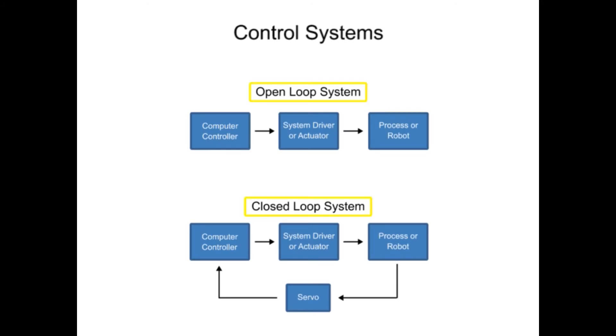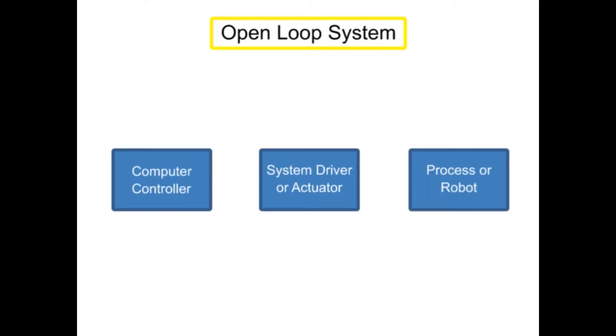There are different types of control systems used in robotics. In open-loop control, the computer sends signals based on the current state without taking into account feedback from the system. This type of system is also called non-servo, or pick and place, and is used in about 35% of the robots in the United States.